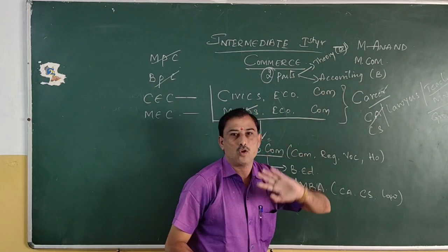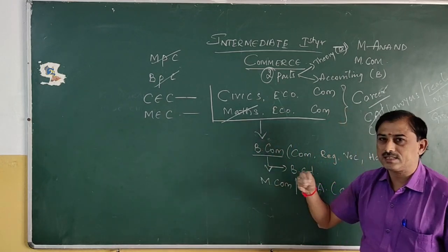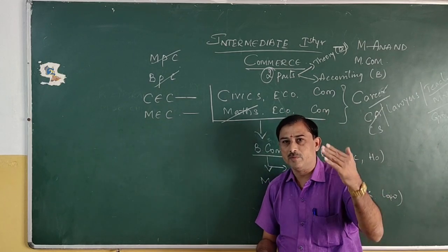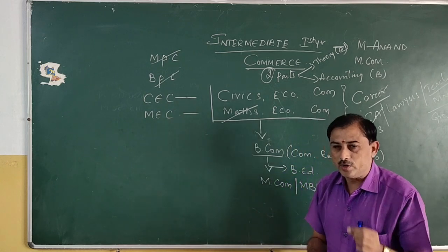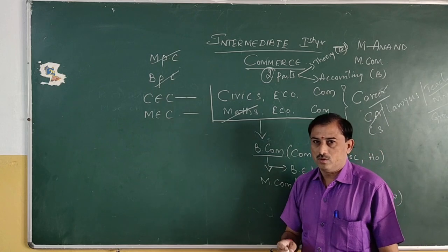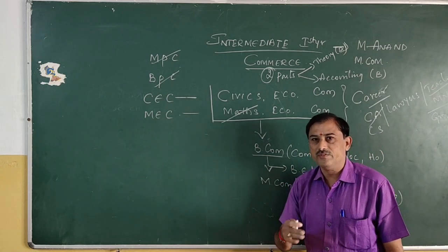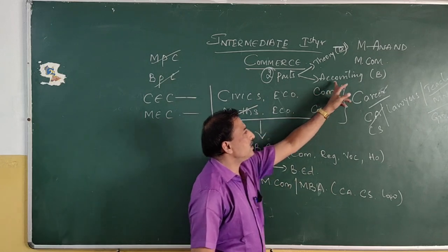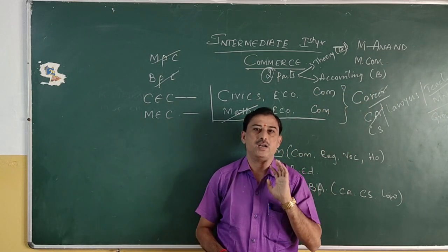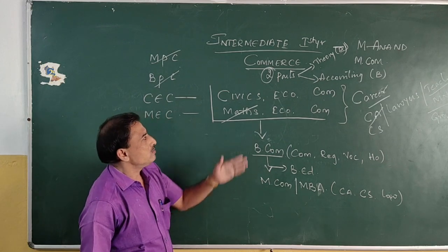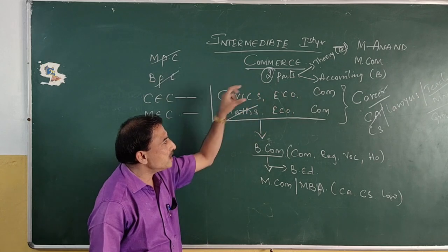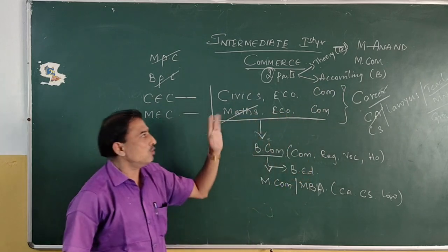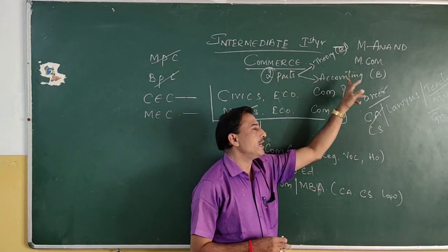Civics, Economics, and Commerce. A student of Intermediate Commerce has a 100-mark paper in Commerce divided into two parts — Part A is the theoretical part and Part B is the accounting part. In the first year, Commerce includes both theory and accounting.